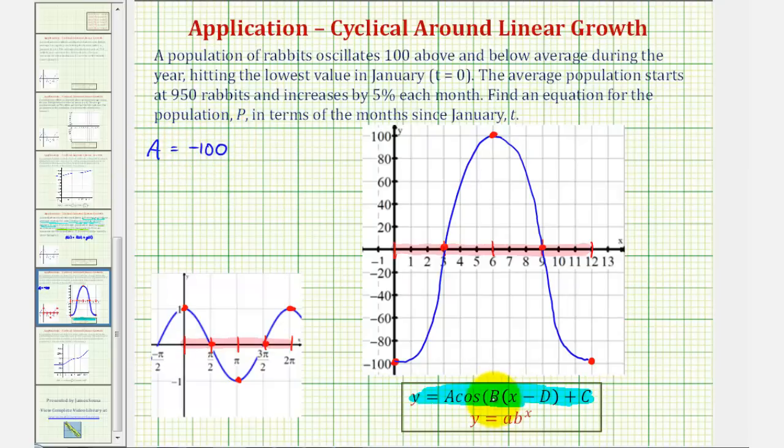And then the period is controlled by b, where the period is two pi divided by b. And since our period is 12, if we set two pi divided by b equal to 12, we can solve for b using this equation.